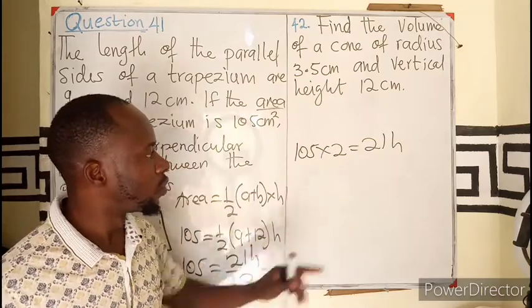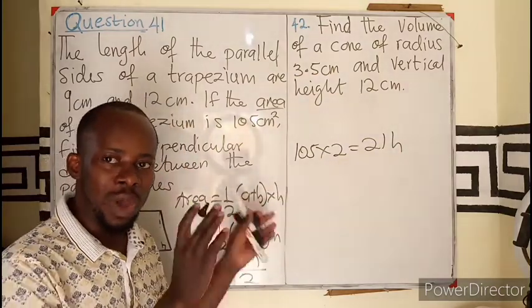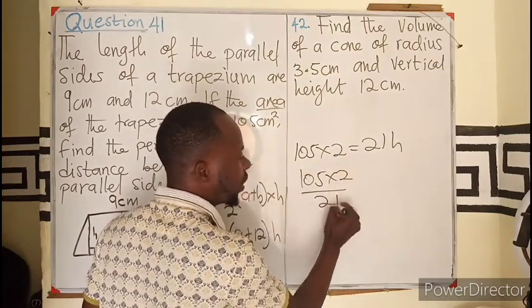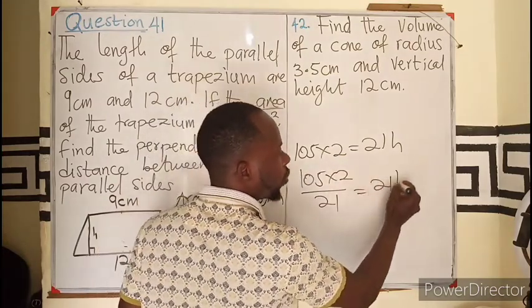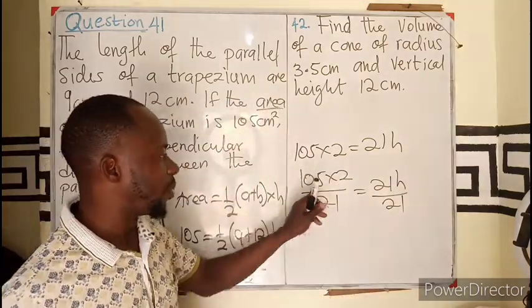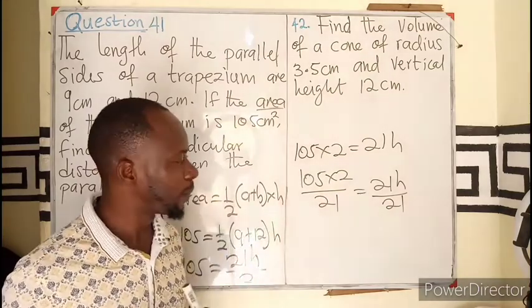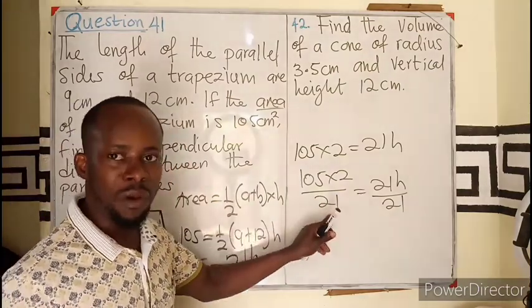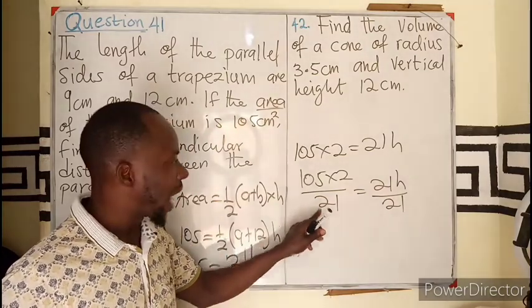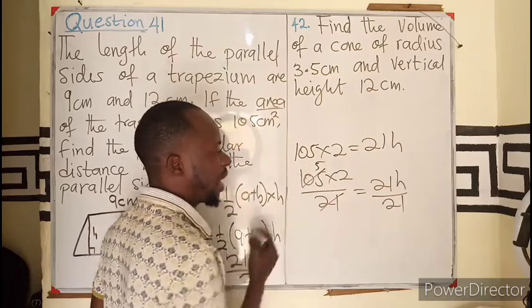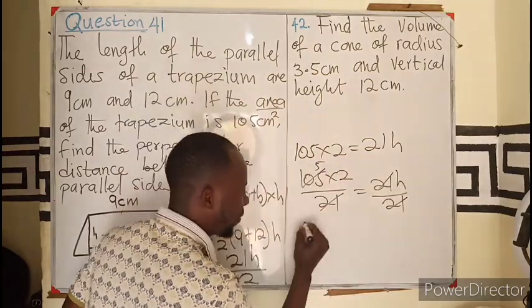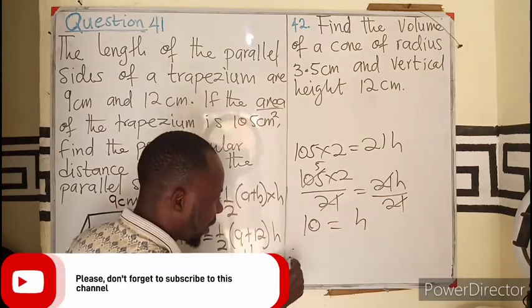If I cross multiply, I will be having 2 to multiply 105, so 105 times 2 equals to 21H. What are we looking for? The height. So I will divide both sides by the coefficient, meaning 105 times 2 over 21. I can see the factor of 21 in 105 because if I use 5 to multiply this I will get 105, so this will cancel. I will leave 10 equals to H.